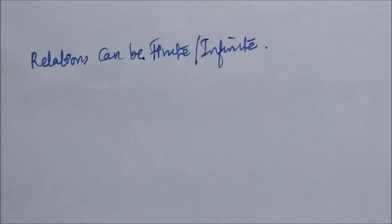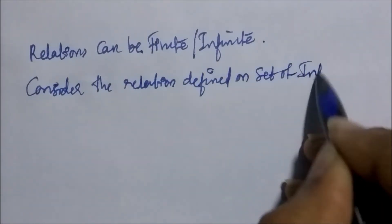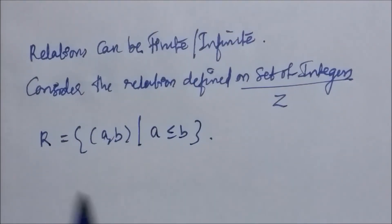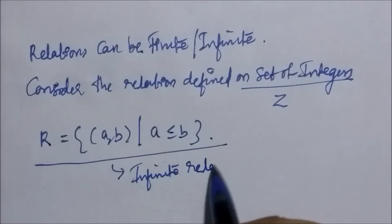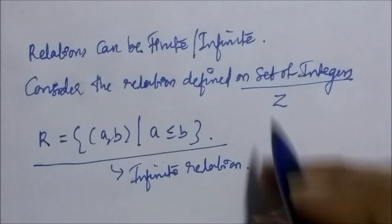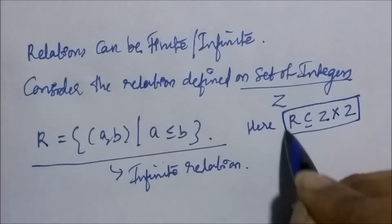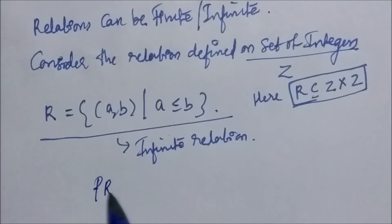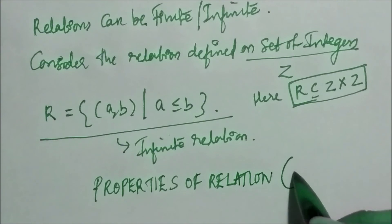A relation can also be an infinite set — it need not always be finite. Consider the relation defined on the set of integers: R equals the set of all (a, b) such that a is less than or equal to b. This is an example of an infinite relation, where the relation is a subset of integers cross integers. In the next lecture we will see the properties of relations, the types of relations, and more.